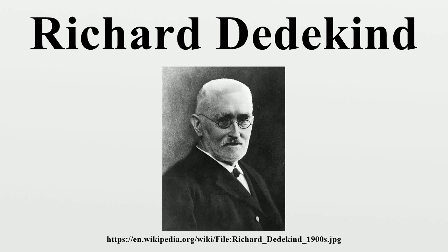Dedekind published his thoughts on irrational numbers and Dedekind cuts in his pamphlet Stetigkeit und Irrationale Zahlen, which in modern terminology establishes completeness. Dedekind's theorem states that if there exists a one-to-one correspondence between two sets, then Dedekind said that the two sets were similar. He invoked similarity to give the first precise definition of an infinite set. A set is infinite when it is similar to a proper part of itself — in modern terminology, equinumerous to one of its proper subsets.